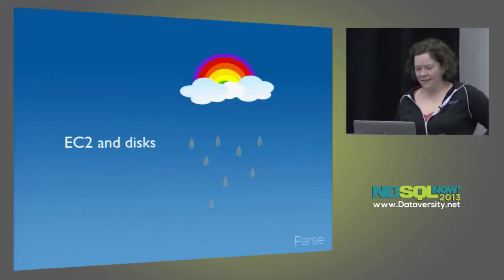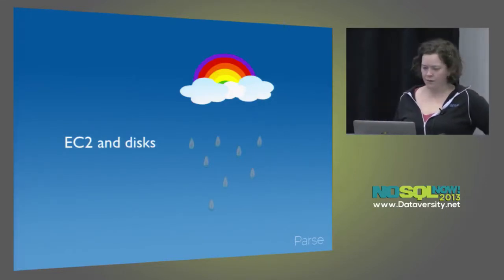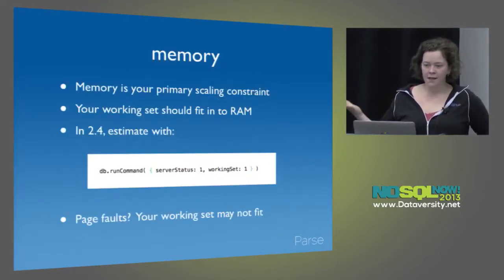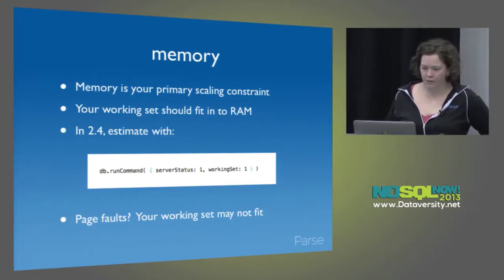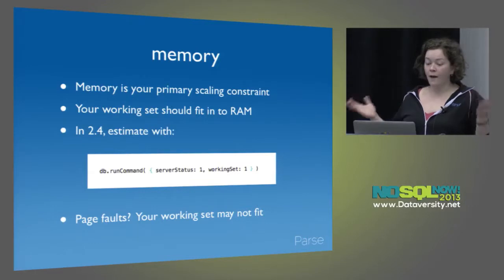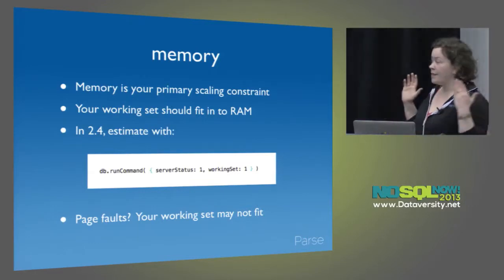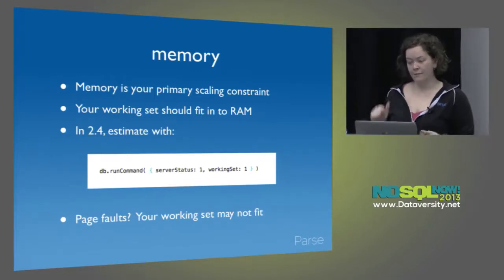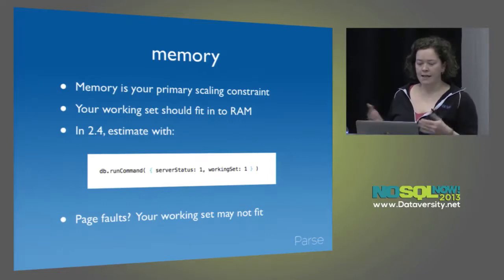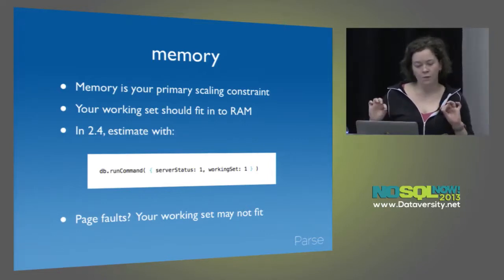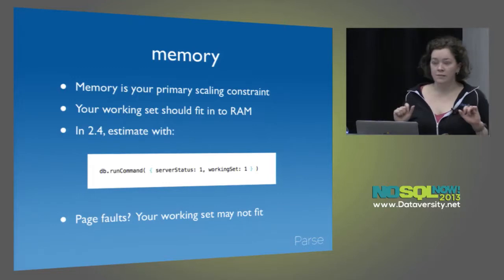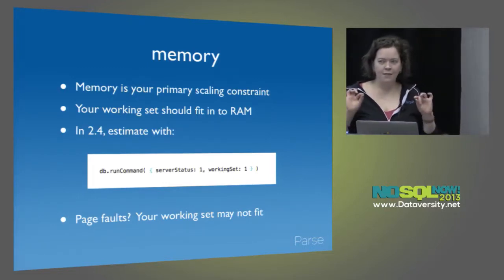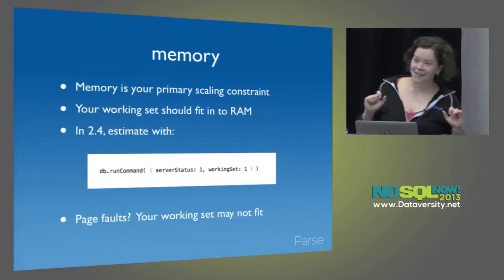Now let's talk about resource types. You need to choose an EC2 instance and some sort of volumes for your disks. The question people usually ask is what instance type should I choose, and the answer is: whatever instance type has enough memory that your working set will fit into it. The working set in Mongo terms is the data and indexes that are actively being used at any given time. Reading from disk is really slow, so you want as much of that working set as possible to fit into RAM.